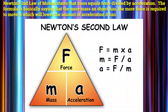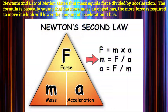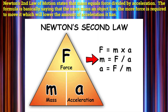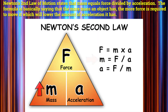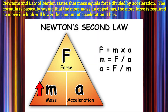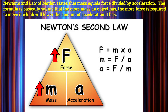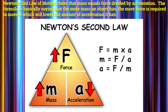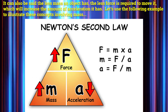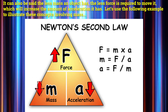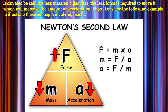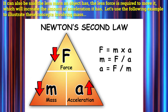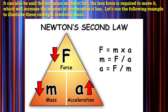Newton's second law of motion states that mass equals force divided by acceleration. The formula is basically saying that the more mass an object has, the more force is required to move it, which will lower the amount of acceleration it has. It can also be said that the less mass an object has, the less force is required to move it, which will increase the amount of acceleration it has.